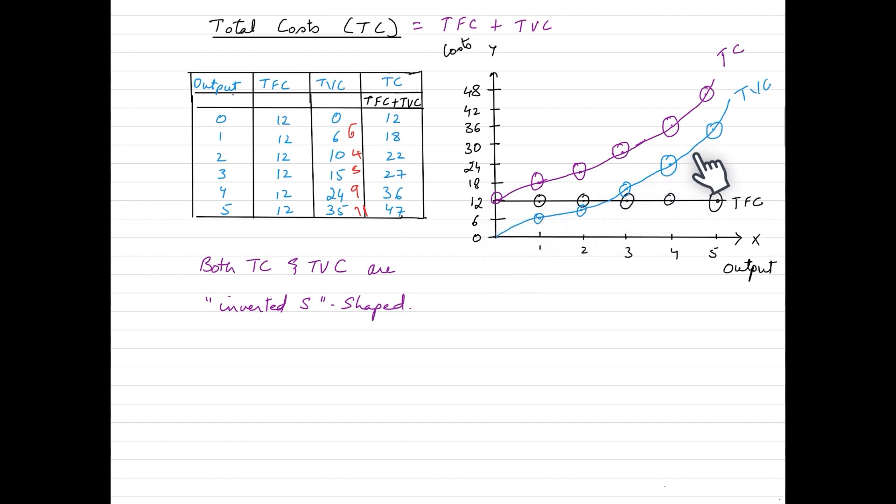Variable cost curve begins from the origin indicating no production, no cost. And as the production increases, the cost tends to increase. However, the rate of increase is the factor which will determine the shape of this particular curve.